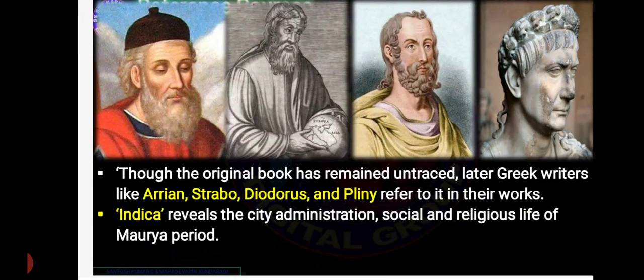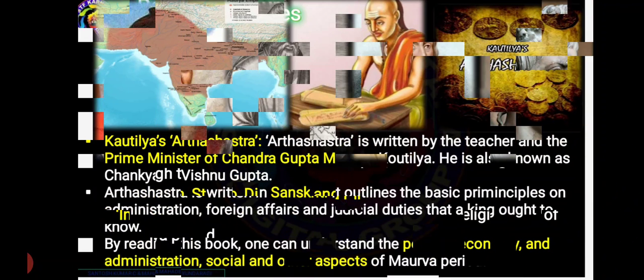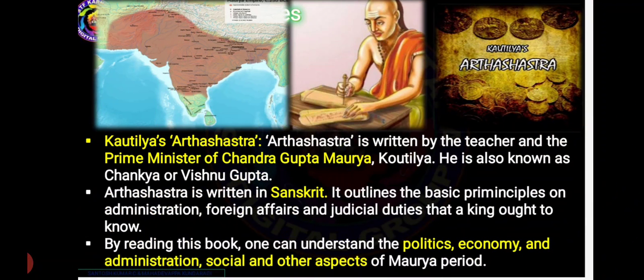Even other Greek writers like Arrian, Strabo, Diodorus and Pliny had referred to the Mauryan Empire. Kautilya, who is known as Chanakya or Vishnagupta, was a prime minister and had written a book called Arthashastra in Sanskrit. The basic principles of administration, foreign contact and judicial duties are found in it.